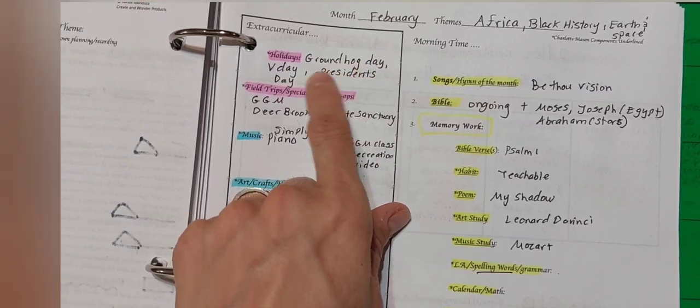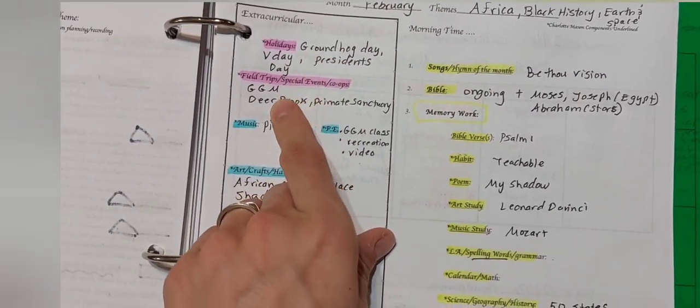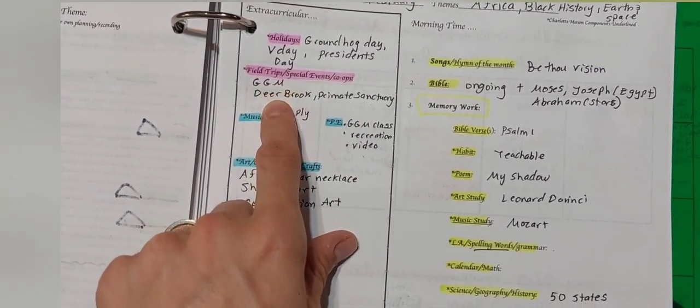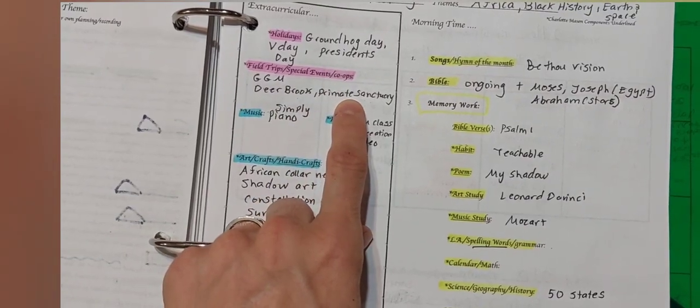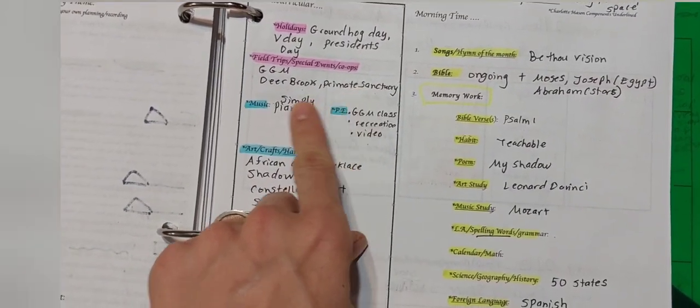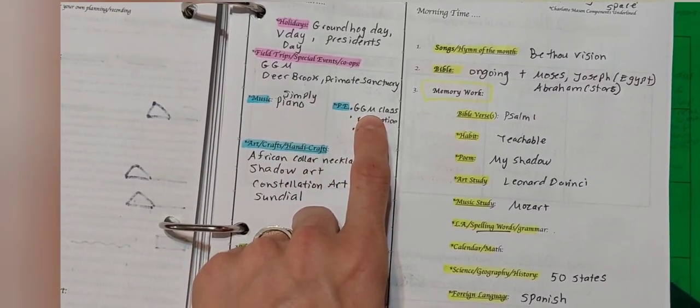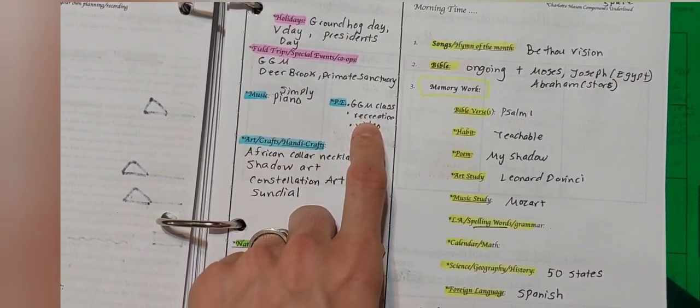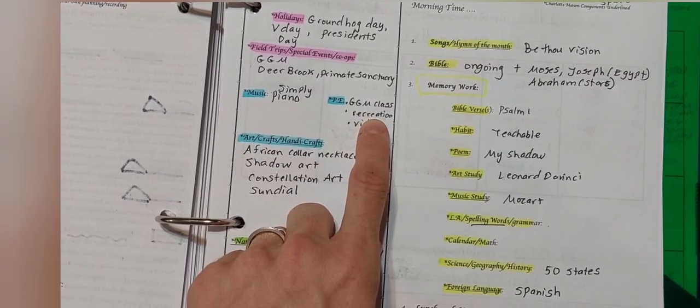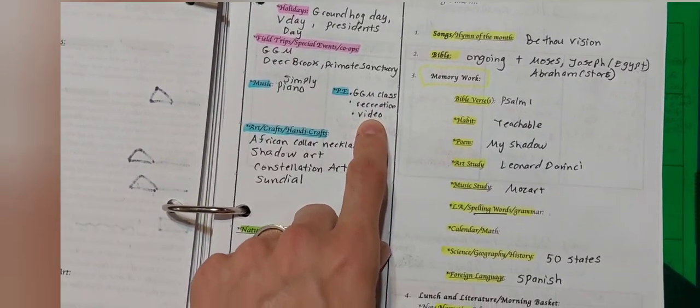Our holidays are Groundhog Day, Valentine's Day, President's Day. We have a co-op, a homeschool group, and maybe a trip to the primate sanctuary that I have to find a date for. We do Simply Piano app for piano, and we have a PE class at our co-op and do some other miscellaneous recreational activities and maybe an exercise video here and there.